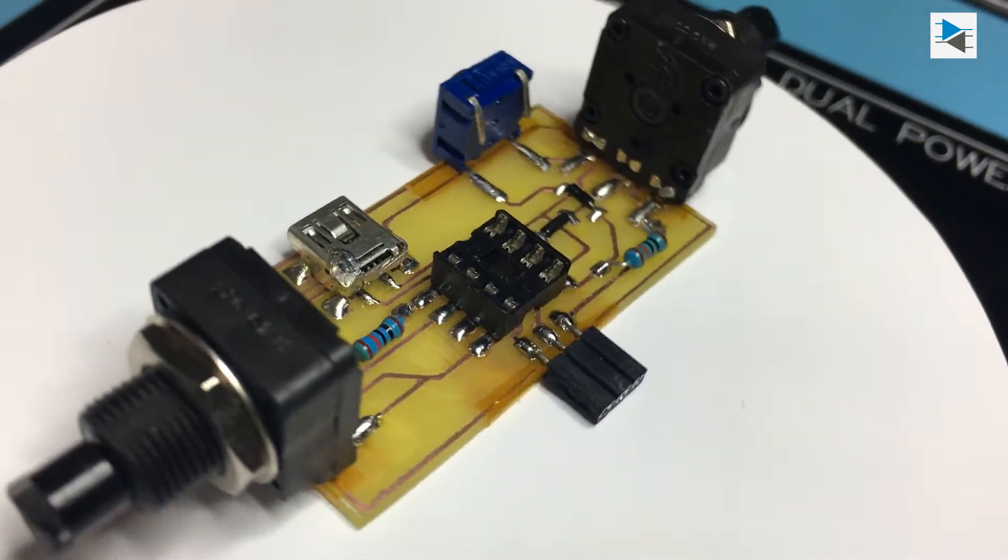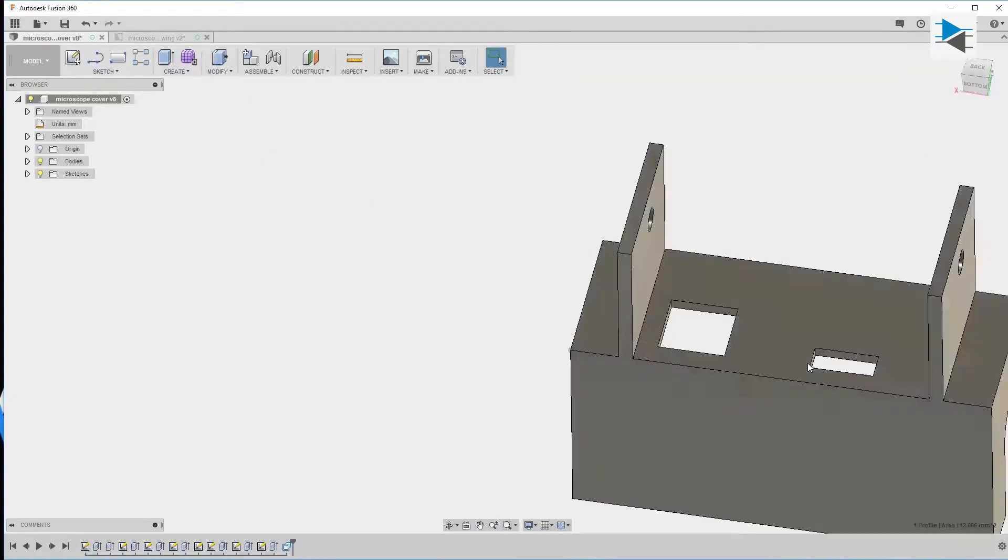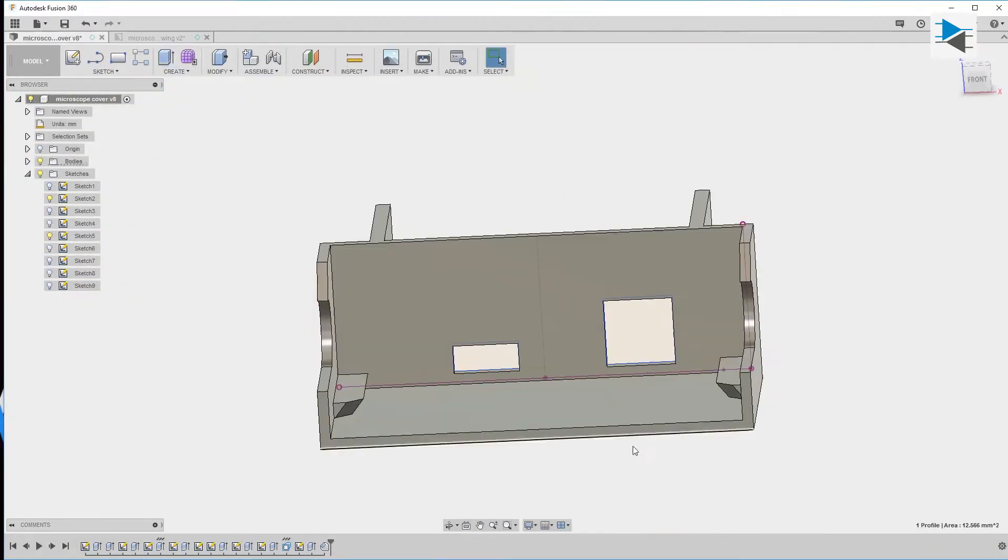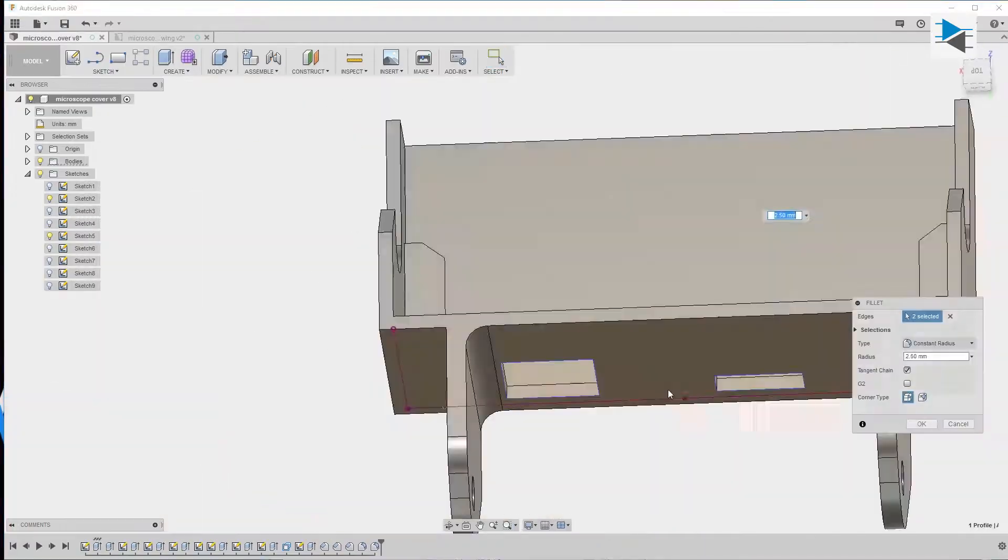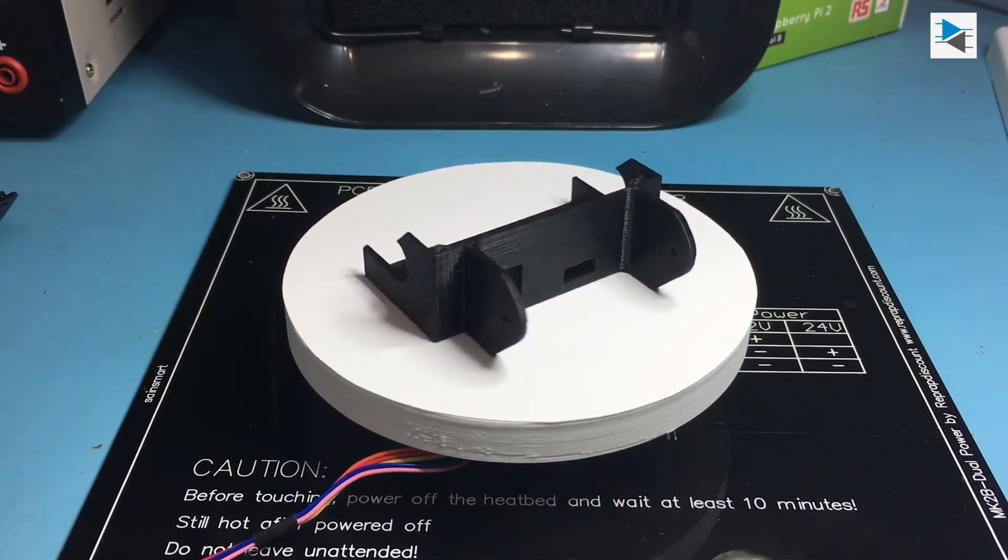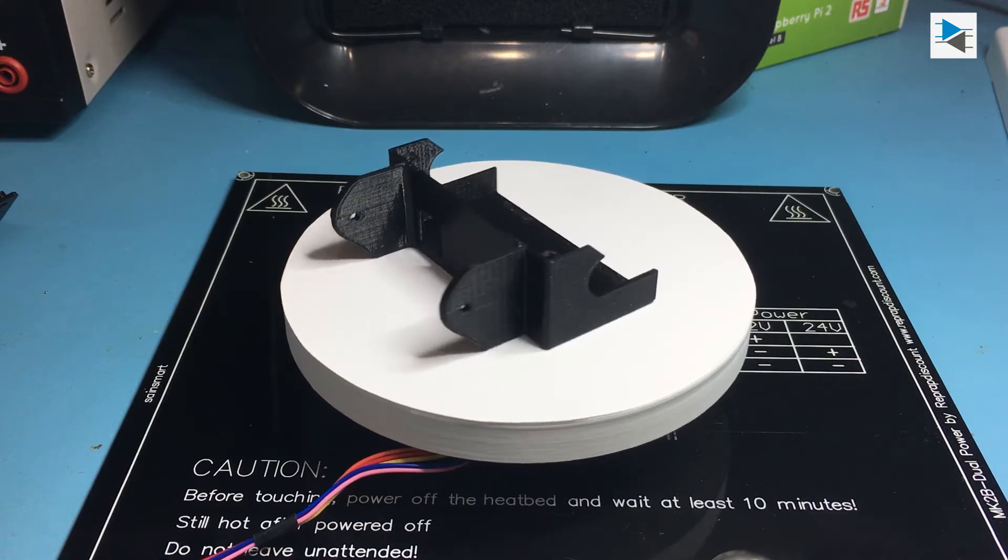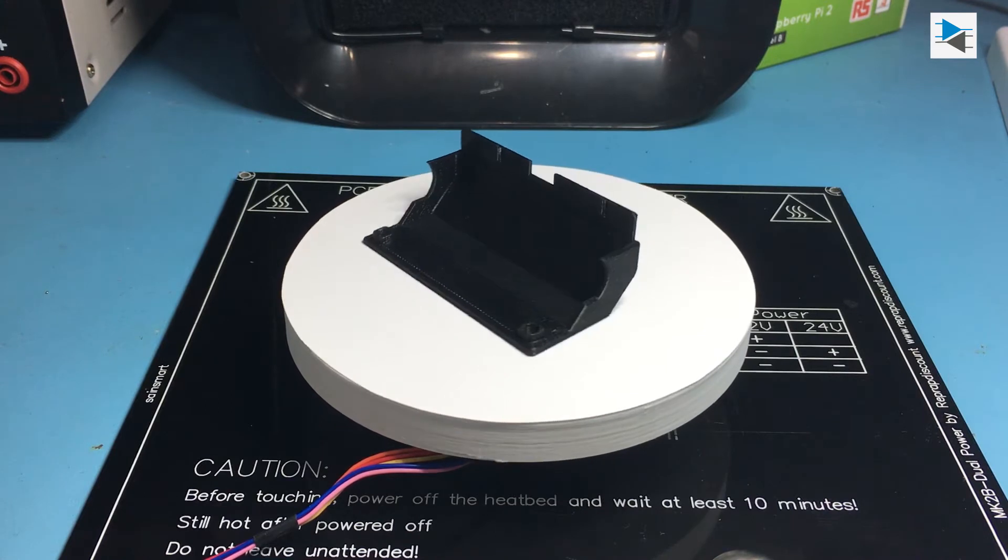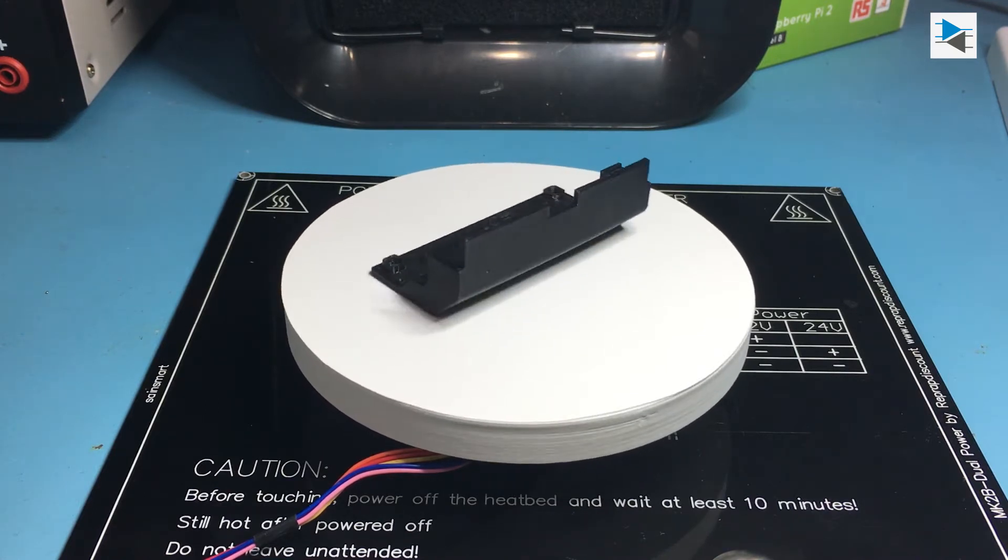After populating the board, it's time to design the case. Fusion 360 is again the tool of choice, and after one or two iterations, the final product is composed of a main piece that holds the PCB with cutouts for the potentiometers, mini USB jack, and tactile switch, and the top cover printed in black PET-G that features the cutout for the ring light connector.